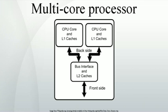In contrast to multicore systems, the term multiprocessor refers to multiple physically separate processing units, which often contain special circuitry to facilitate communication between each other. The terms many-core and massively multicore are sometimes used to describe multicore architectures with an especially high number of cores. Some systems use many soft microprocessor cores placed on a single FPGA, where each core can be considered a semiconductor intellectual property core as well as a CPU core.